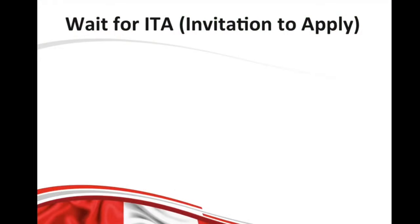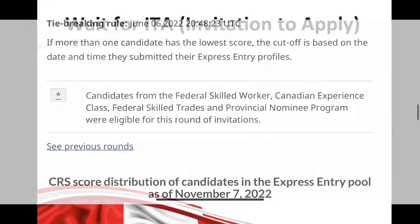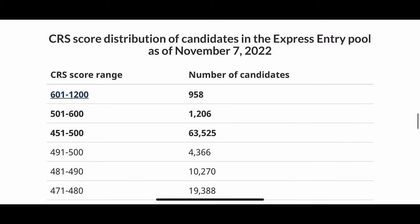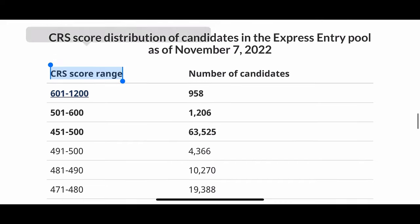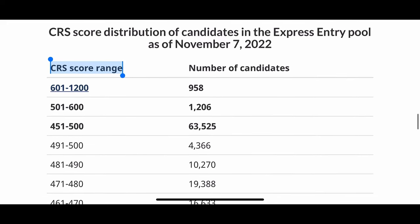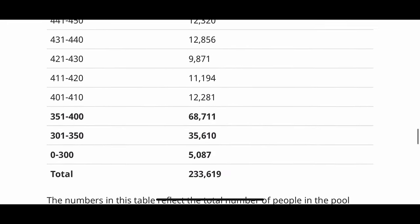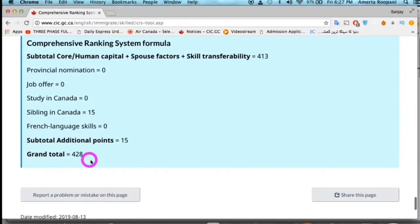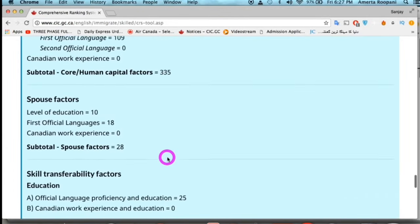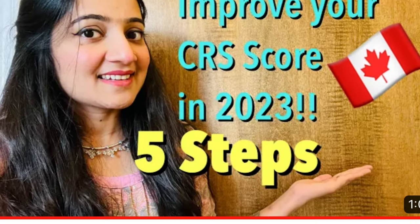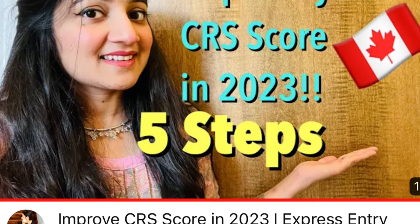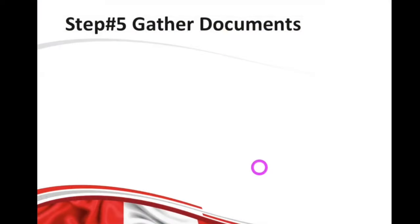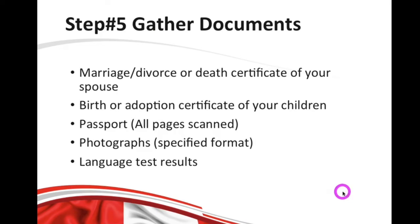After creating your profile, all you have to do is wait for an Invitation to Apply. During this time you will be ranked in the Express Entry pool using a points-based system called CRS. CRS assesses and scores your profile — the higher the score, the more chances you have to receive an invitation to apply. There are many opportunities to increase your CRS score, which I've mentioned in a previous video linked in the description.